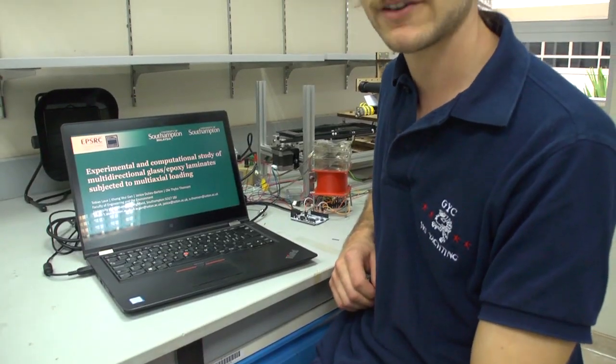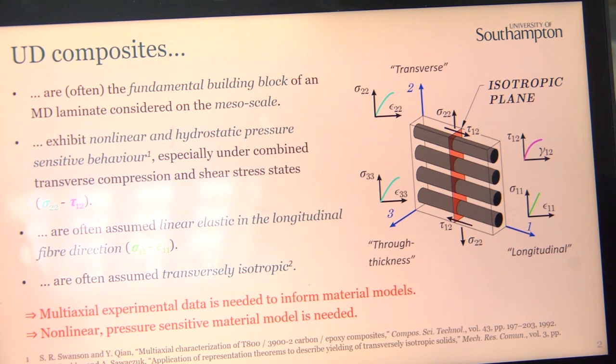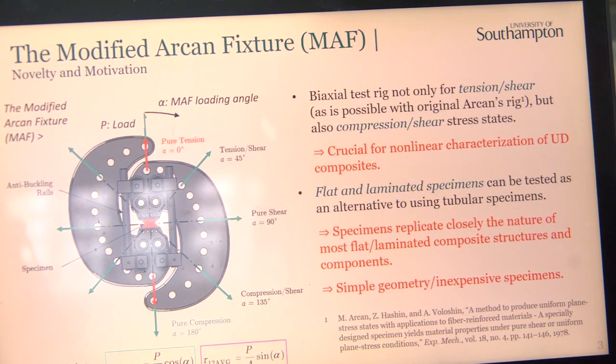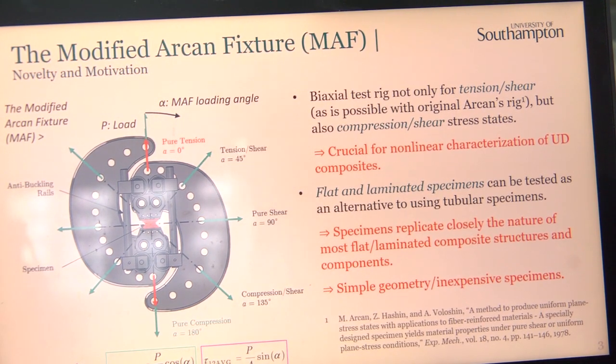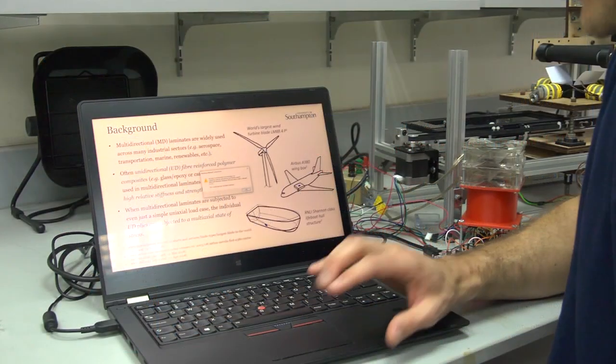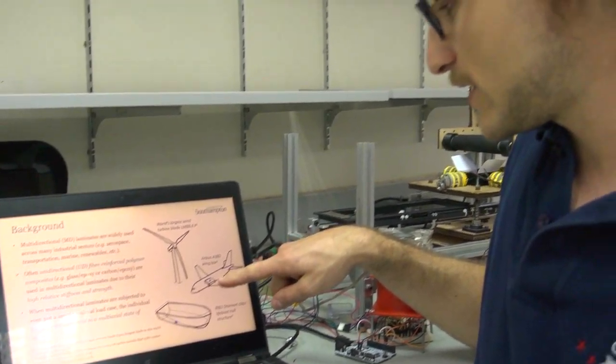What is important for you, firstly, is to have a set of material properties of the material you design with. This is, for example, strength - when does a material break, so how strong it is - and stiffness, which tells you about how the material deforms.